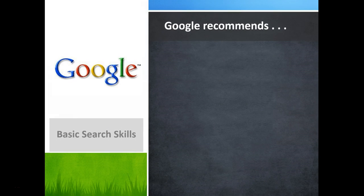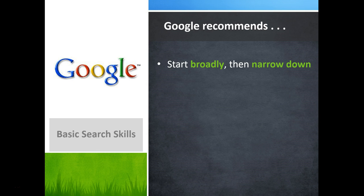Let's talk a little bit about how Google prefers you to search. Google recommends that you begin your search exploration broadly, then narrow it down as you discover more specific topics you're interested in. You should also consider what web sources you should use. Should you use Wikipedia? For academic research, the answer is definitely no.